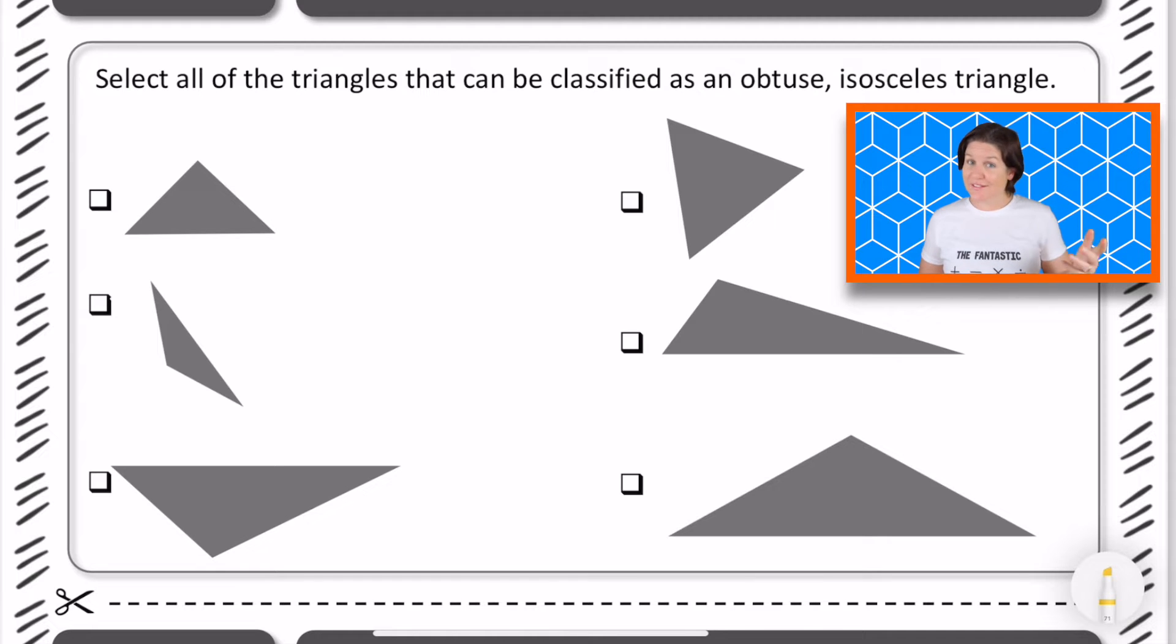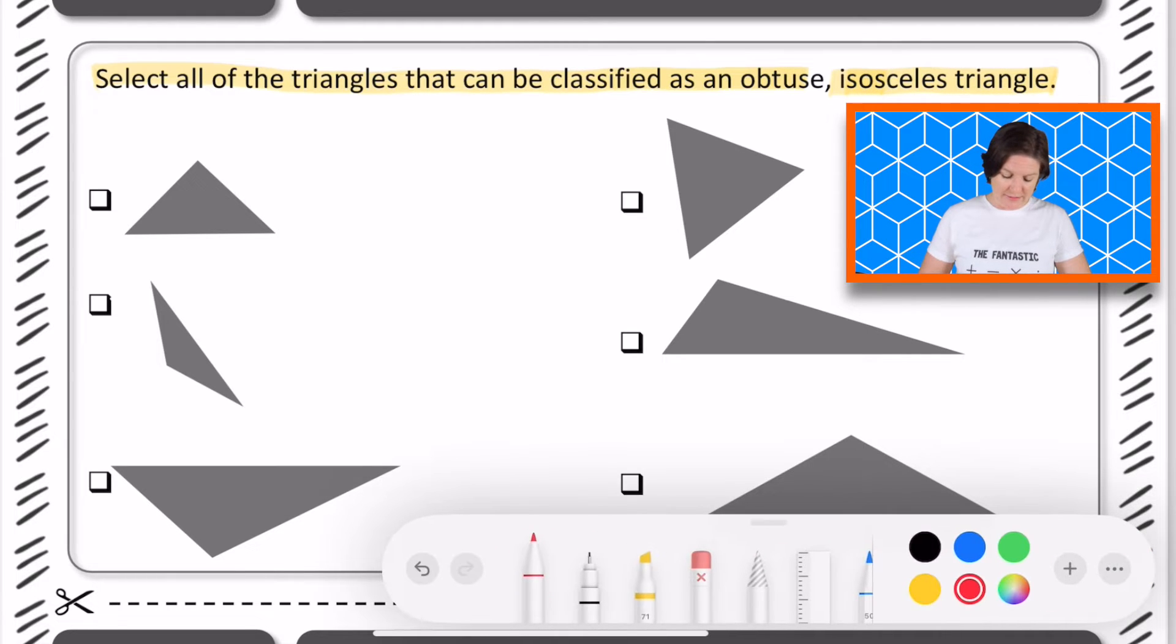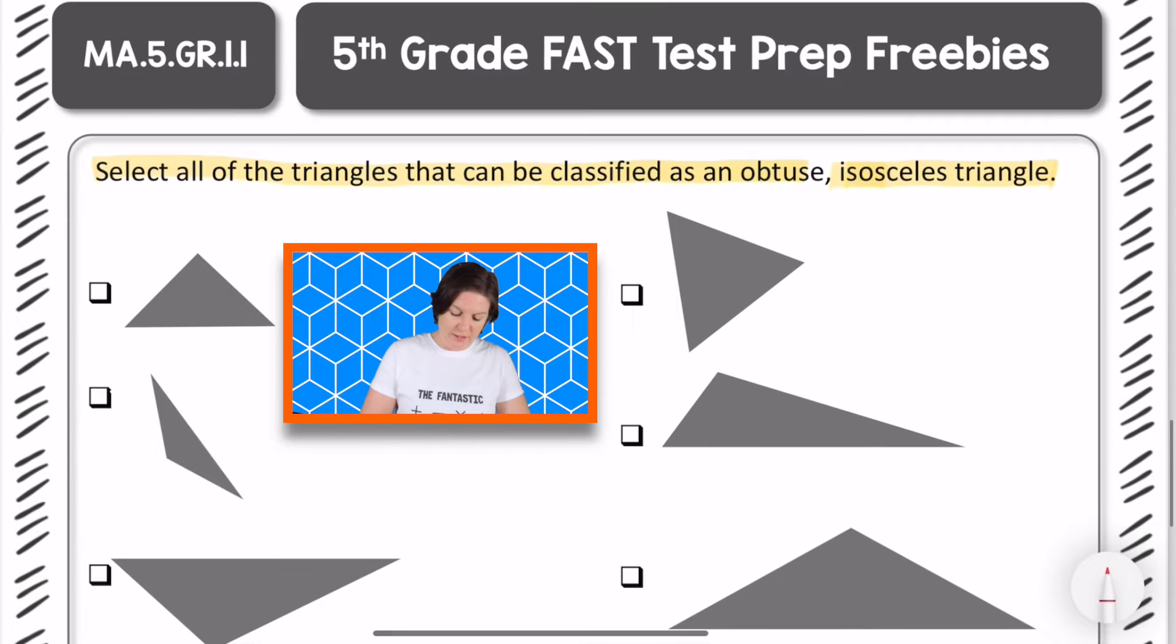Welcome back fifth grade. Let's go over this one. So this says select all of the triangles that can be classified as obtuse and as an obtuse isosceles triangle. So it needs to be obtuse and it needs to be isosceles. So I'm going to go ahead and jot down some notes here that an obtuse triangle, we need one obtuse angle. And isosceles means that we need how many sides to be equal or the same? Yeah, two sides the same.